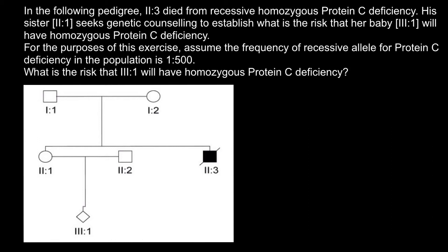Hello and welcome to Nikolai's genetics lessons. Today's problem: in the following pedigree, individual 2.3 died from recessive homozygous protein C deficiency. His sister 2.1 seeks genetic counseling to establish what is the risk that her baby 3.1 will have homozygous protein C deficiency. Assume the frequency of the recessive allele for protein C deficiency in the population is 1 out of 500.